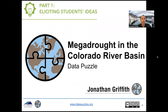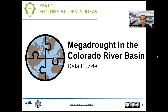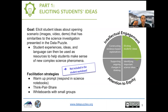In this video, I'm going to describe the eliciting students' ideas practice in the context of the megadrought in the Colorado River Basin data puzzle. The goal of this practice is to elicit student ideas about an opening scenario — these could be images, a video, or a demonstration that has similarities to the science investigation presented later in the data puzzle. Student experiences, ideas, and language can be used as resources to help students make sense of complex science phenomena, so it's really important at the start that we bring out these student resources to leverage them later.